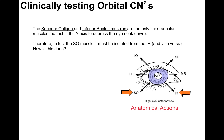The superior oblique and the inferior rectus muscles are the only two extraocular muscles that act in the y-axis to depress the eye and look down. Therefore, to test the superior oblique, it must be isolated from the inferior rectus and vice versa.